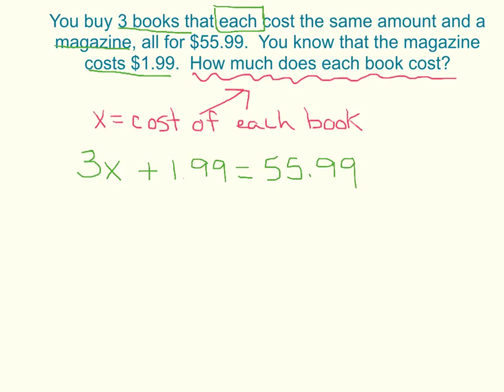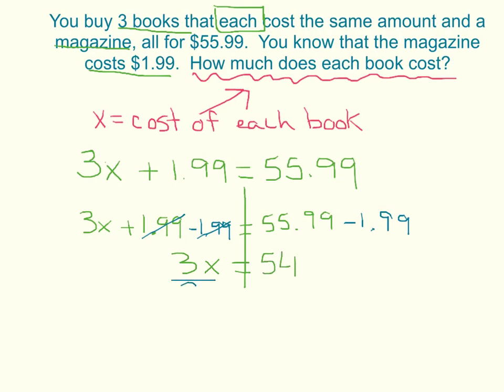Now I have to solve this equation to find the cost of each book. So to solve, I have to first subtract $1.99 on both sides. And on the left side, we have a 3x left over. And then $55.99 minus $1.99 is exactly $54. And now we have to divide by three.